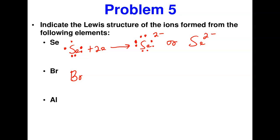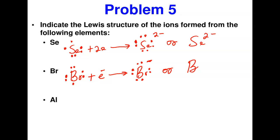Bromine is in group 7A, so it has seven dots. It needs only one more electron to complete its octet. After gaining one electron, it forms the bromide ion with a fully filled valence shell — eight dots around it — and a charge of −1. This is written as Br⁻.